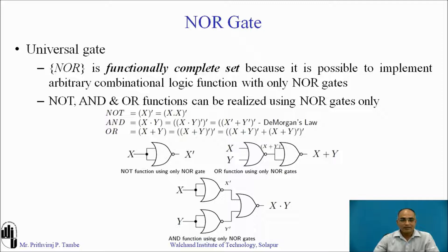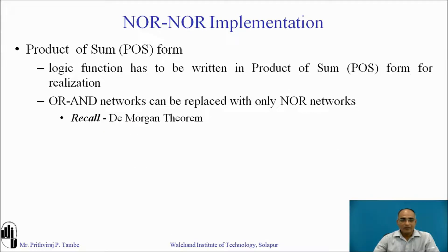Because of that, the NOR gate can be considered a functionally complete set — this proves that statement. Now let us understand the basics of NOR-NOR implementation. For NOR-NOR implementation, your Boolean expression or logic function should be in POS (Product of Sums) form. We will understand this with De Morgan's theorem, and at the end we will learn how OR-AND networks can be replaced with only NOR networks.